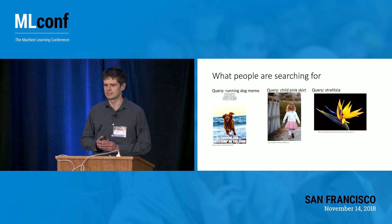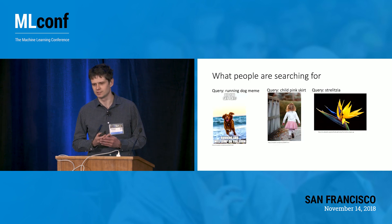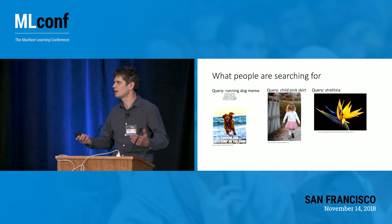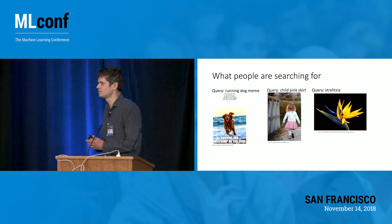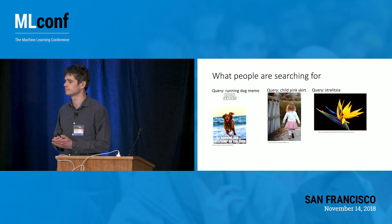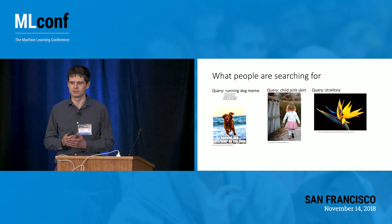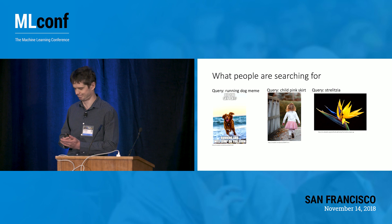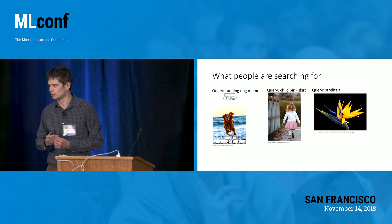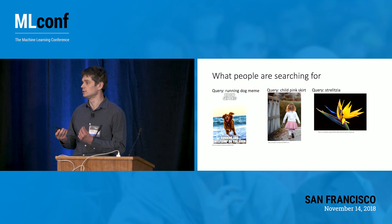Some example queries can be 'running dog memes' — a funny photo where a dog is almost going to jump on you. Or you're searching for inspiration or a product for a query like 'child pink skirt.' Or for an object which is a flower — strelitzia. For all of this, we need solid image understanding and technology to empower the search engine, and it's challenging.